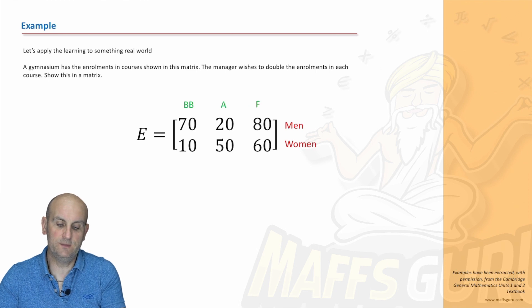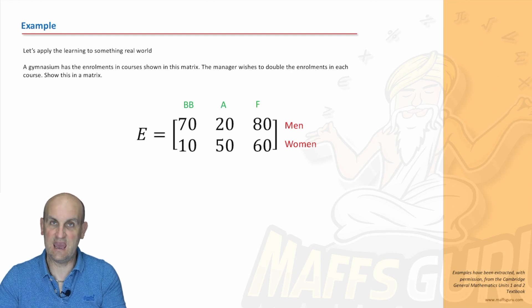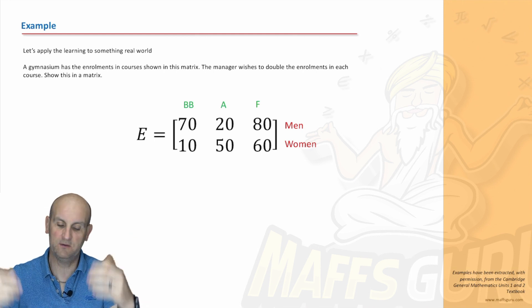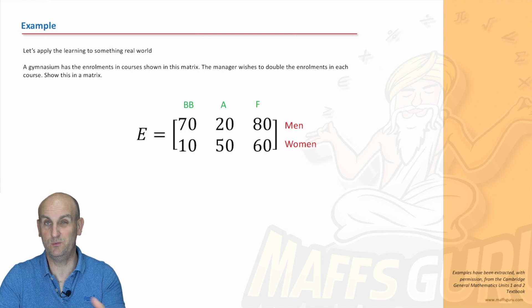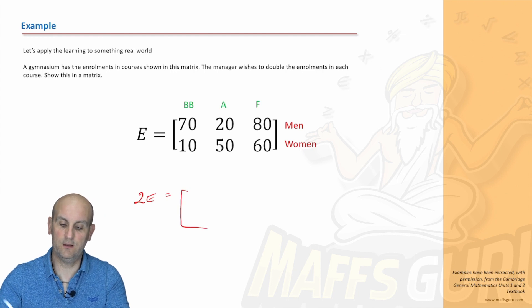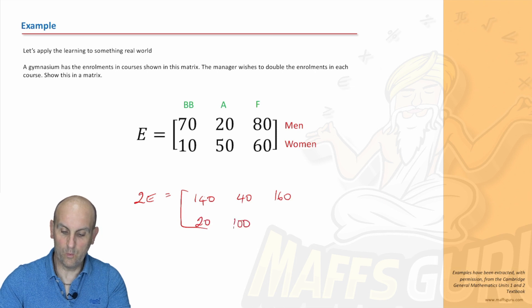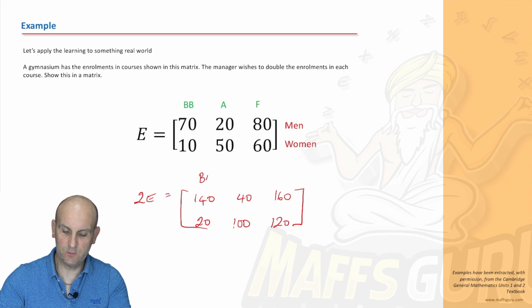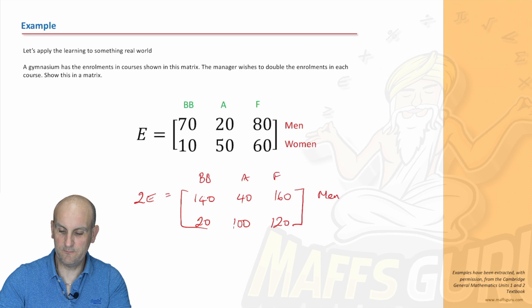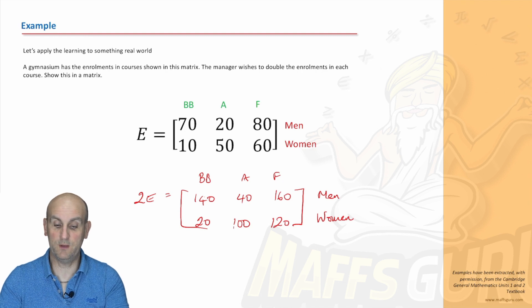So how would this be useful to us? Well, it might well be that a gymnasium has enrollments in courses shown in the matrix. The manager wishes to double the enrollments in each course. BB, AF, aerobics, fitness, men and women. So they want to double the enrollments. So what would that be wanting us to do? We will basically then be wanting to work out 2E. So again, how are we going to do this? Well, I'm going to multiply everything by 2. So that's going to become 140, 20 times 2 is 40, 160, 20, 100, 120. Make sure we put the column headings on top. And I'm just going to write men and women. And lo and behold, by hand, I've just done scalar multiplication. And all now my members have been doubled.